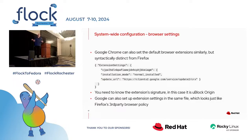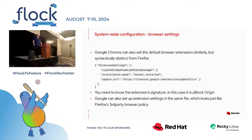In Chrome, for example, you don't give the extension name — you get a weird string like CJPALHE... and that is the UUID of the browser extension in the Chrome Store. It lets you do things like tell it to install the extension automatically or uninstall it. That's another nice thing you can make it do.